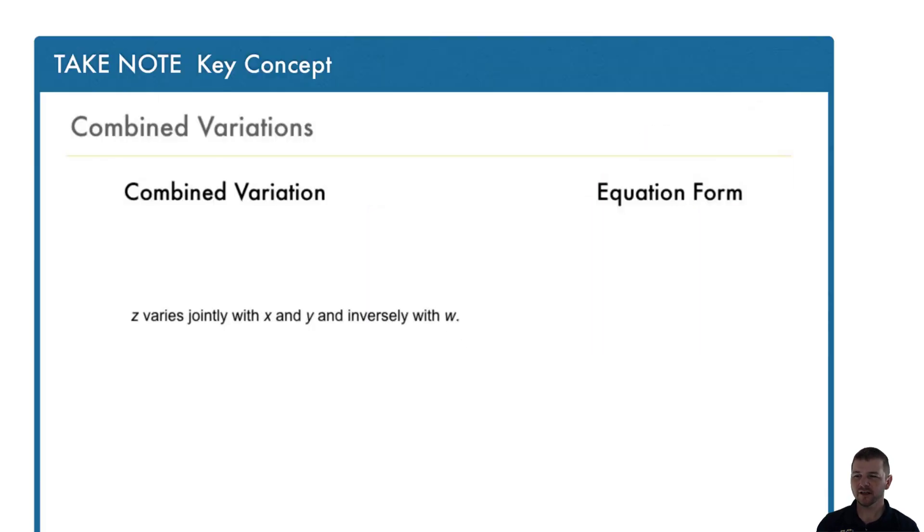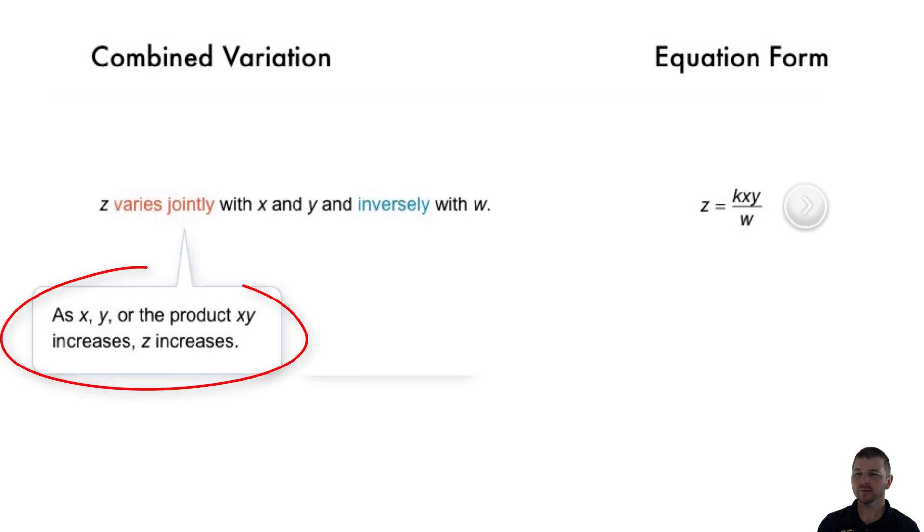Next, z varies jointly with x and y and inversely with w. Its equation form, z equals kxy over w. So note, as x, y, or the product x times y increases, z increases. And as w increases, z decreases.